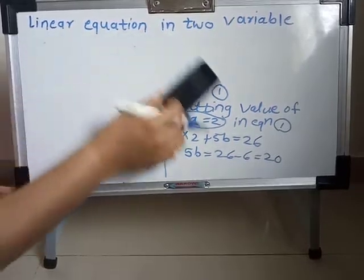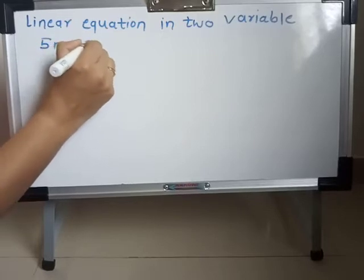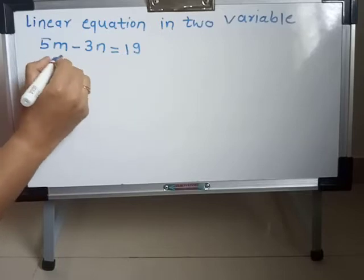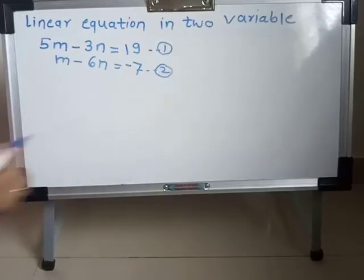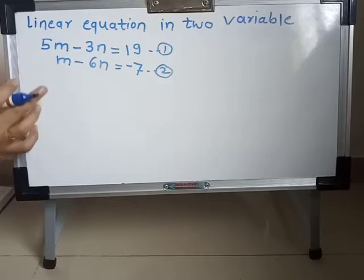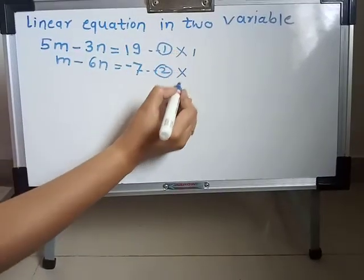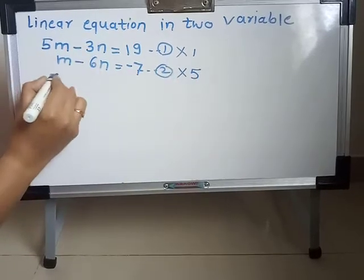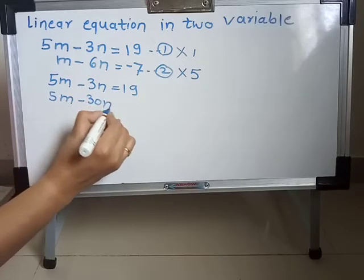Now solve the second question. The equations are: 5M minus 3N is equal to 19, and M minus 6N is equal to minus 7. Label them equation first and equation second. Here M and N coefficients are not the same — 5M and M, 3N and 6N differ. To eliminate M, multiply equation second by 5 to get 5M. Write equation one as is: 5M minus 3N equals 19. Multiply equation two by 5: 5M minus 30N equals minus 35.